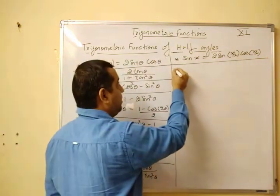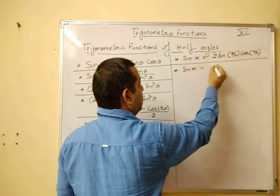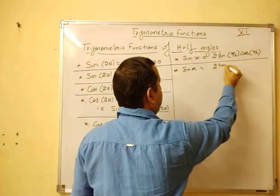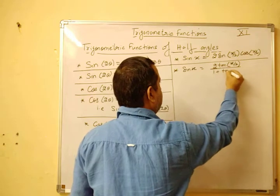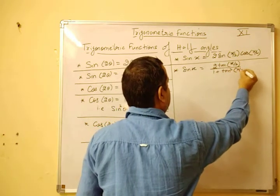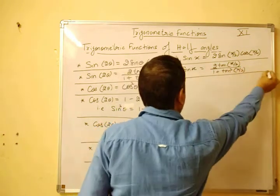Then similarly, here you have sin of x, this is equal to 2 tan x by 2 upon 1 plus tan square x by 2. No cancellations.